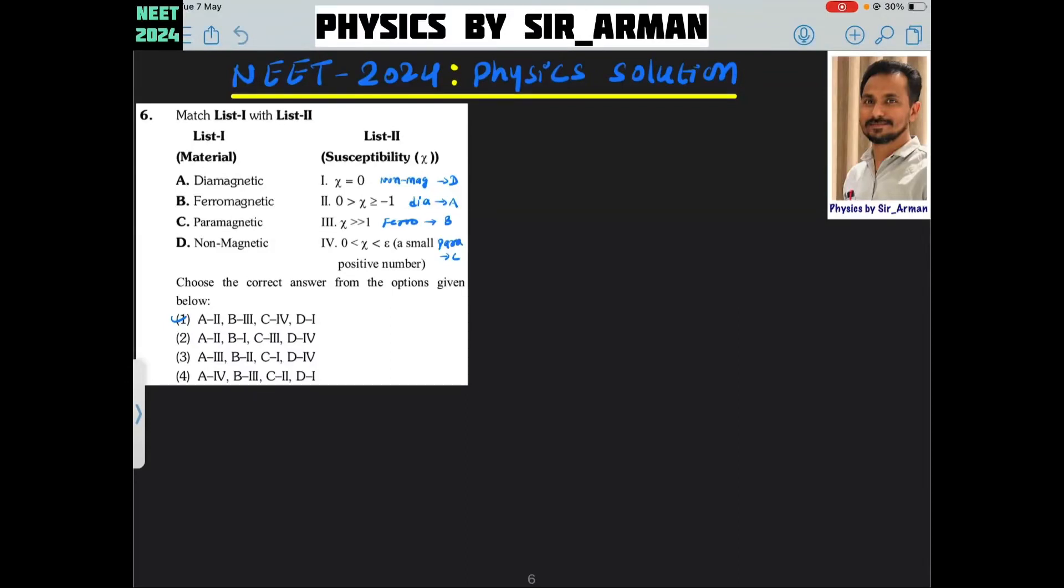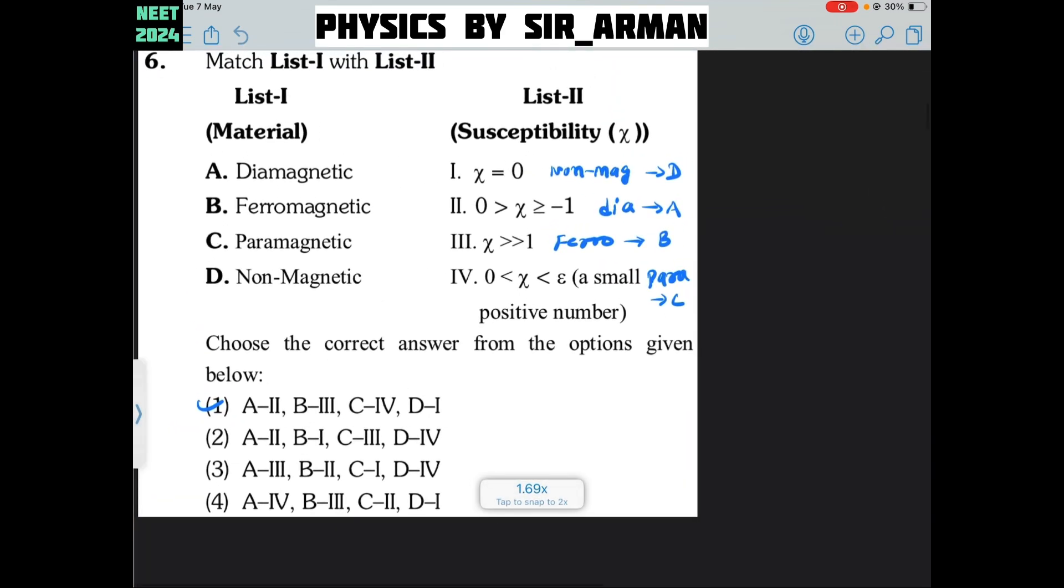Question number 6. Match list 1 with list 2. Here in this question some magnetic properties are given and we have to match their properties with the right side.